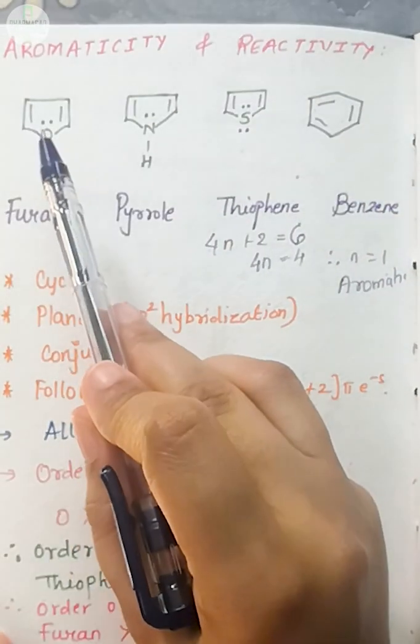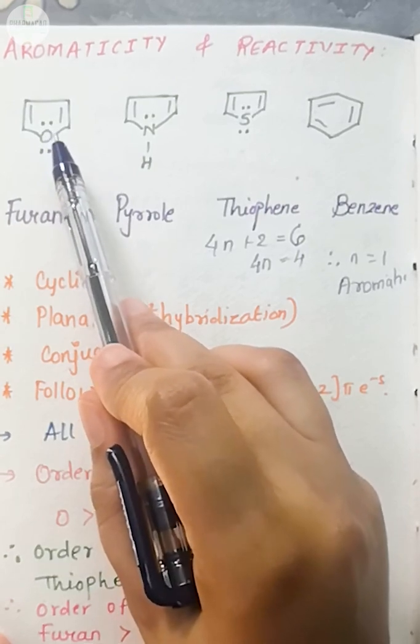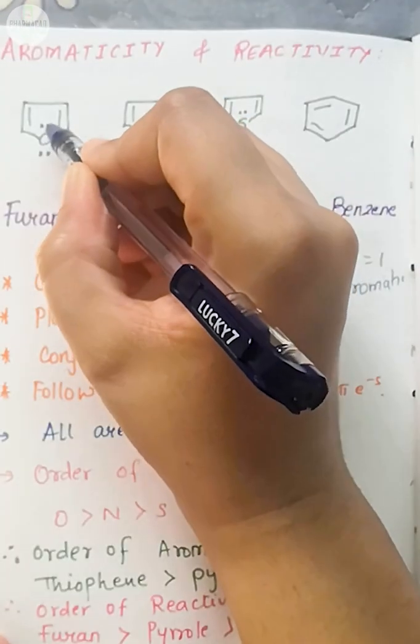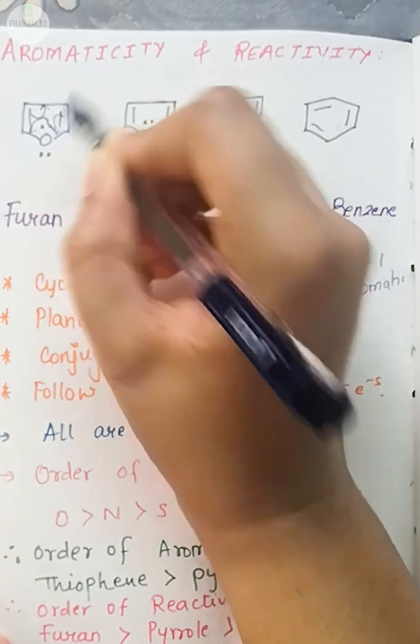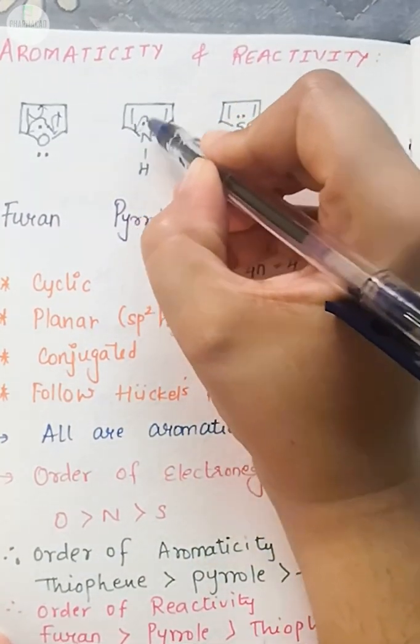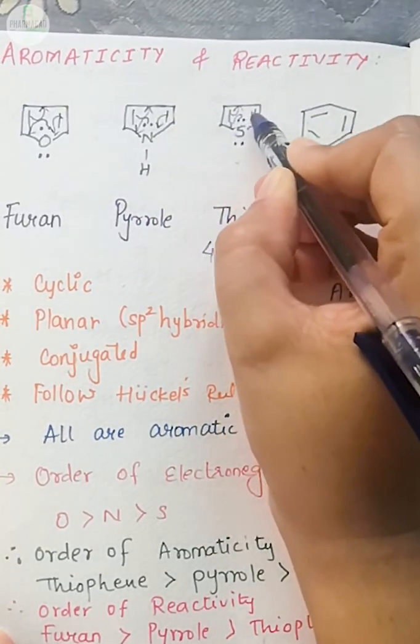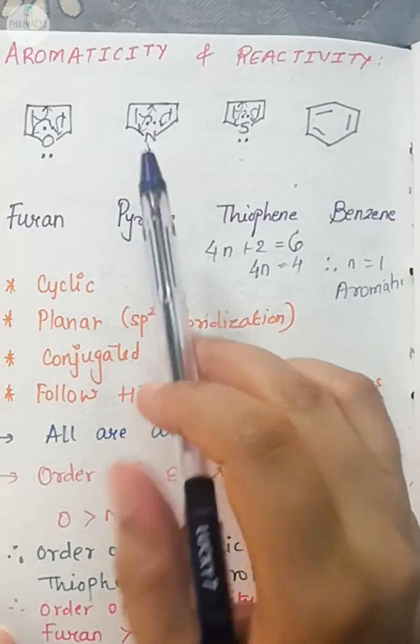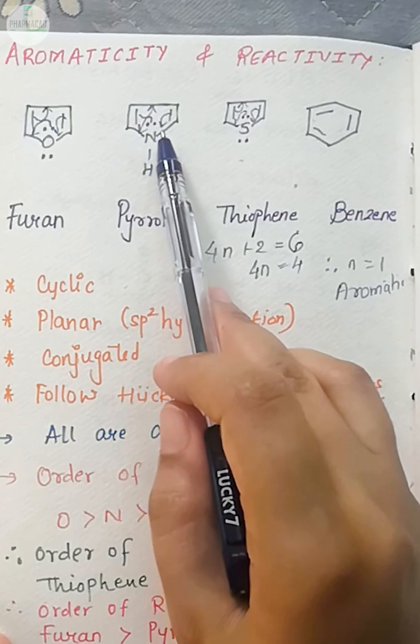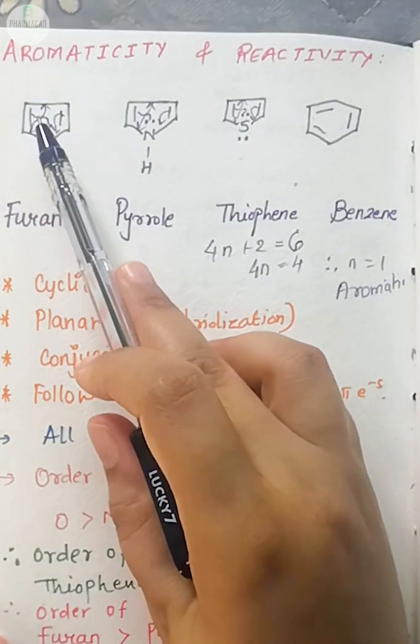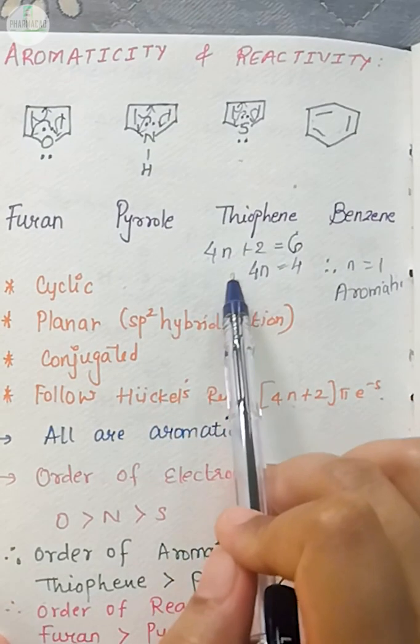And this lone pair which is present, you have to consider it because it will go in conjugation. See, resonance will take place like this. This lone pair is in this position, then this will go here and this will come here. Similarly in this case, this lone pair will go here, this comes here, and this comes like this. So the lone pair which is present, that is involved in resonance, you will consider pi electrons. So I have 2 double bonds everywhere and 2 electrons from a lone pair. So total number of electrons in each case is 6.